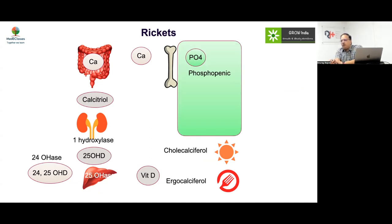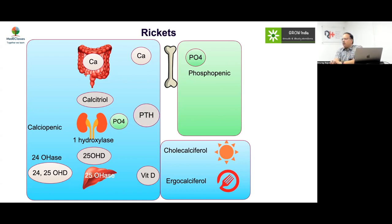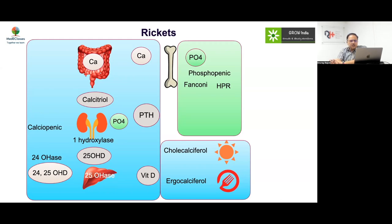Rickets can be phosphopenic — where phosphorus is the predominant problem — or calciopenic, where calcium is the problem. If calcium is low, PTH will rise and phosphate excretion will increase, making the patient hypophosphatemic. So everyone with rickets is expected to be phosphopenic; the more appropriate term is 'normal calcemic hypophosphatemic' for certain forms.